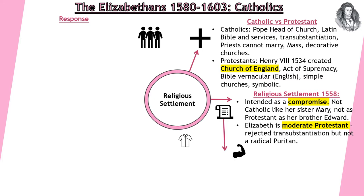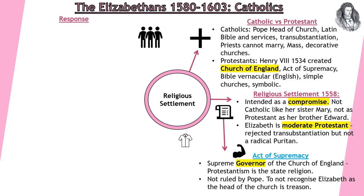Elizabeth rejects the idea of transubstantiation, but she's not a radical Puritan either. The Religious Settlement is split into two. The first part is the Act of Supremacy. She's very careful in the wording here — she calls herself Supreme Governor of the Church and not Supreme Head. This is because she would believe that the head of the church should be Christ. Governors tend to oversee; they're important, but they use the views of others to make decisions.